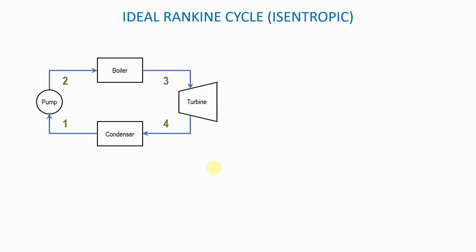Initially you have feed water at one, and this feed water will go through the pump. The purpose of the pump is to add work to the water — to work on the water so as to push it to the boiler. The pump draws the water from one and pushes it all the way to the boiler, so where the pump is, we say there is an input of work. W-in means that work is done on the water so that it can travel to the boiler. After the pump we are at two, and the water now goes inside the boiler.